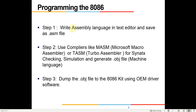Now, how do we program this 8086? The first step is to write assembly language in a text editor — it could be Notepad++ or whatever — and save it as a .asm file. This .asm file in the second step can be read by compilers. There are two mostly widely used compilers: the first one is MASM, known as Microsoft Macro Assembler, and the second is TASM, Turbo Assembler, by Borland. These compilers check the syntax in the .asm file, allow some simulation, and then generate the .obj object file.